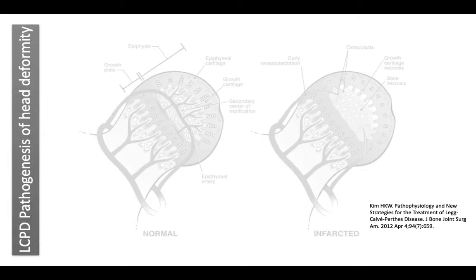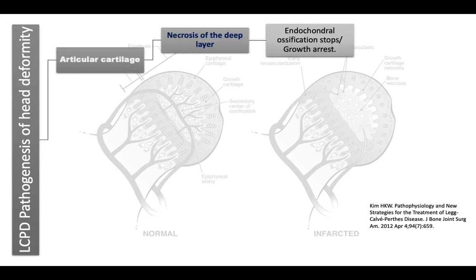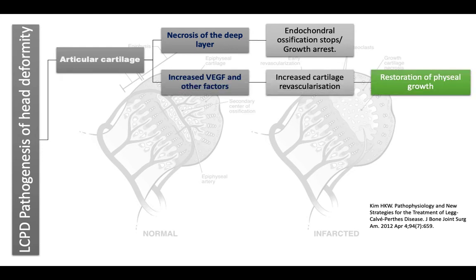Regarding the articular cartilage in Legg-Calvé-Perthes deformity: there will be necrosis of the deep layer of the articular cartilage, and endochondral ossification will stop on the articular side with growth arrest. Afterwards, in the revascularization stage, increased vascular endothelial growth factor and other factors result in cartilage revascularization and restriction of physeal growth. Unfortunately, this growth is often asymmetric, which accentuates femoral head deformity.